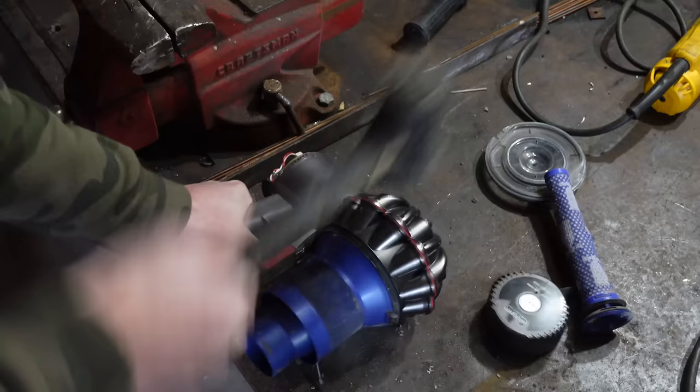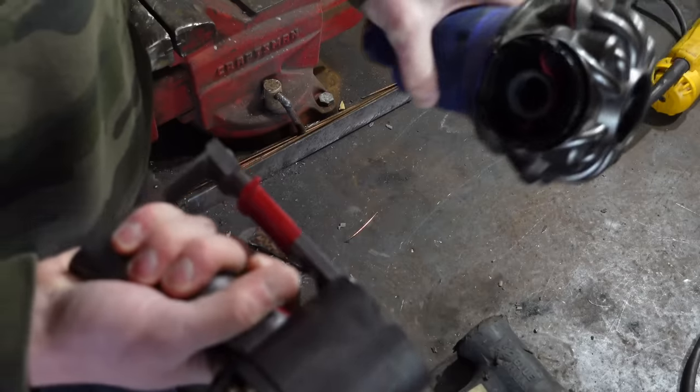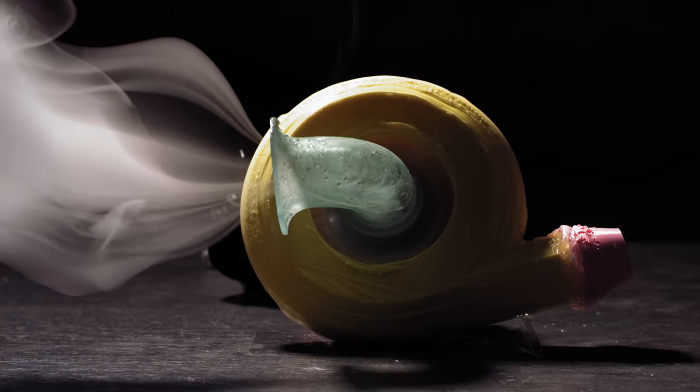This video is sponsored by Factor. A while back I made a video about harvesting the motor and impeller from a broken Dyson vacuum and turning it into a snail blower so that the flow was directed through a nozzle.